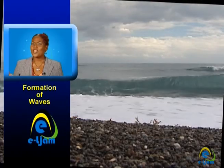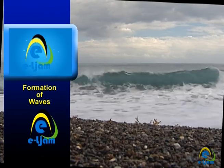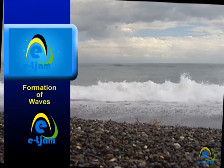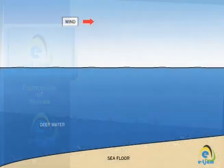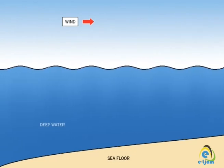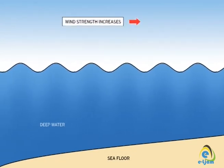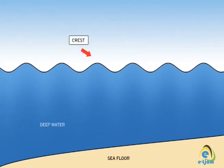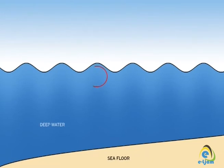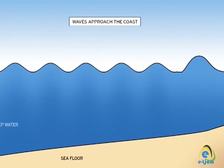As you stand on the shore of a beach and watch the waves tumble towards you, you will observe several things. The waves are being formed by wind blowing across the water surface, and as the wind gets stronger, the waves become more powerful. As the wave approaches the coast, it becomes steeper and an oscillatory or rotating movement becomes more evident.